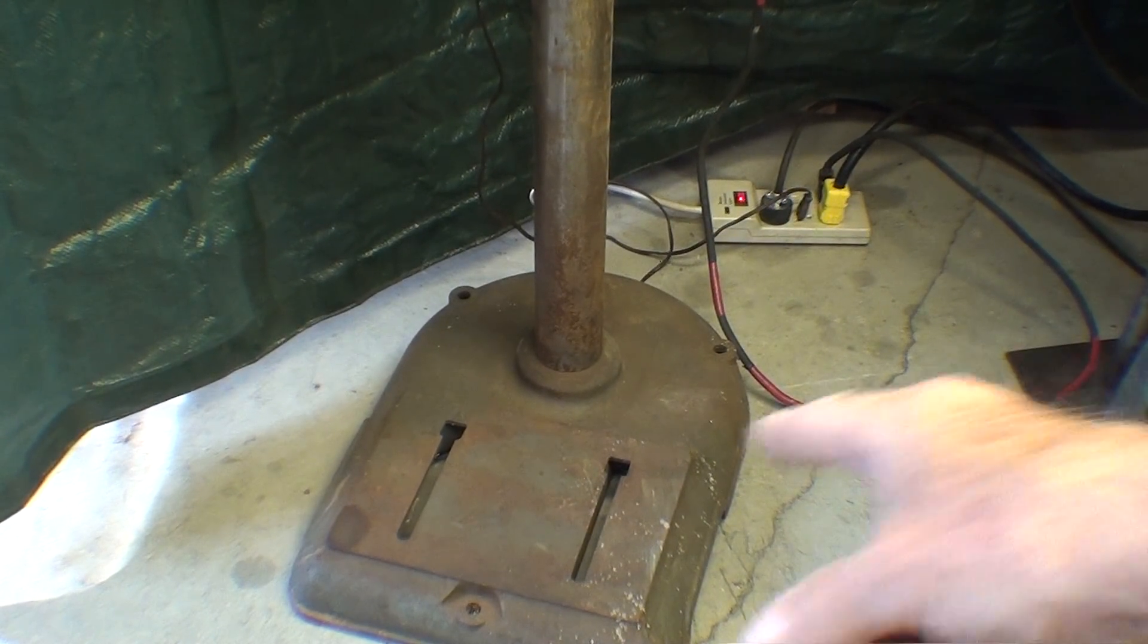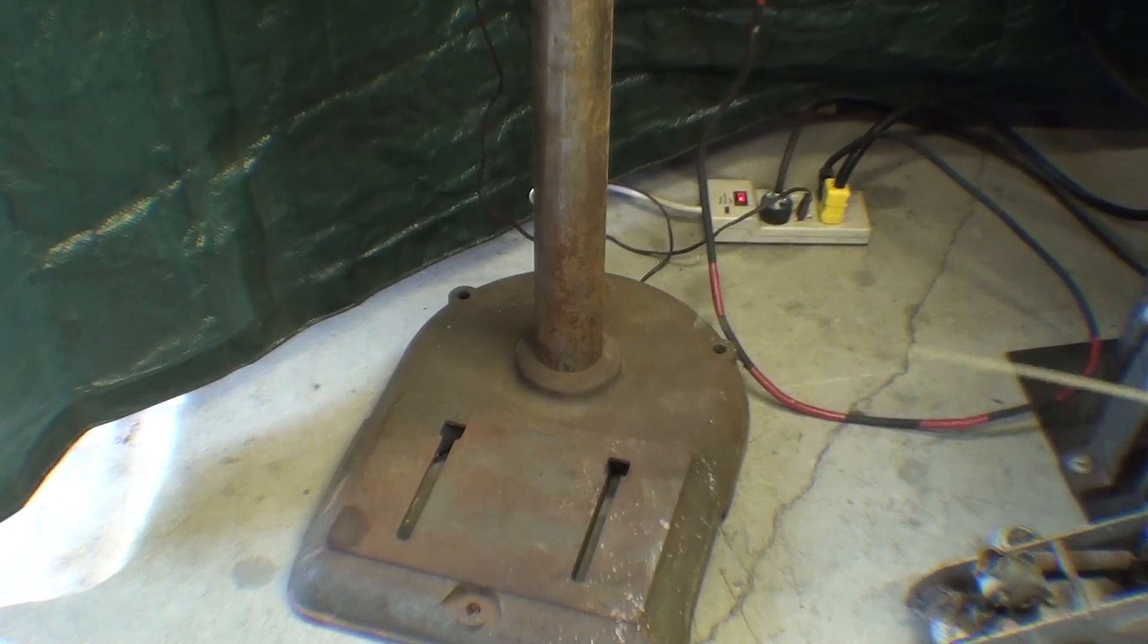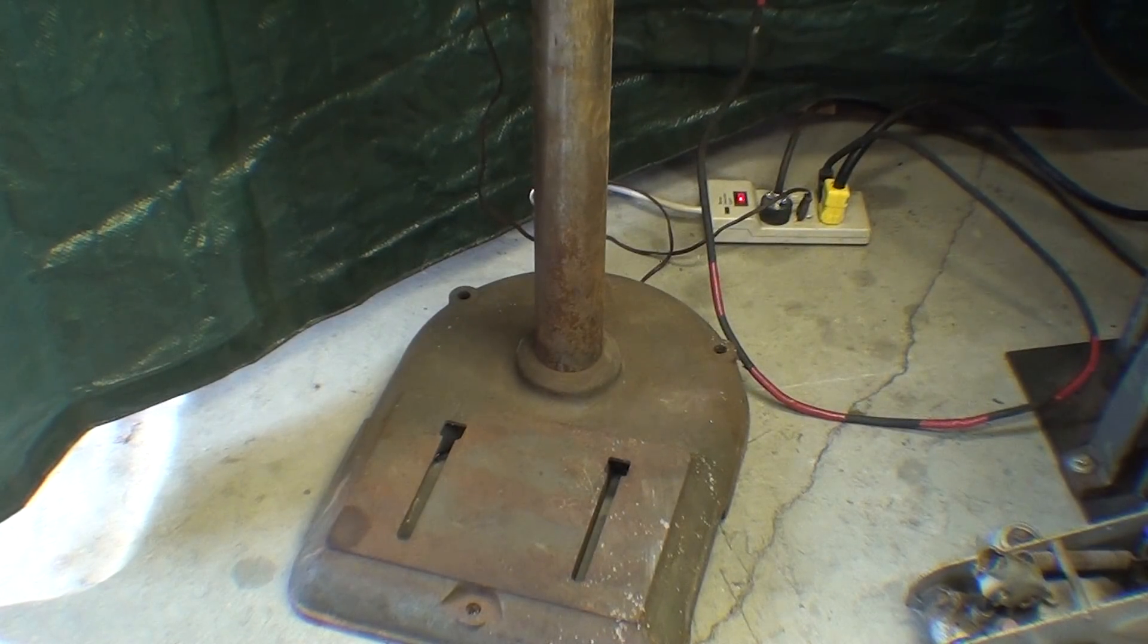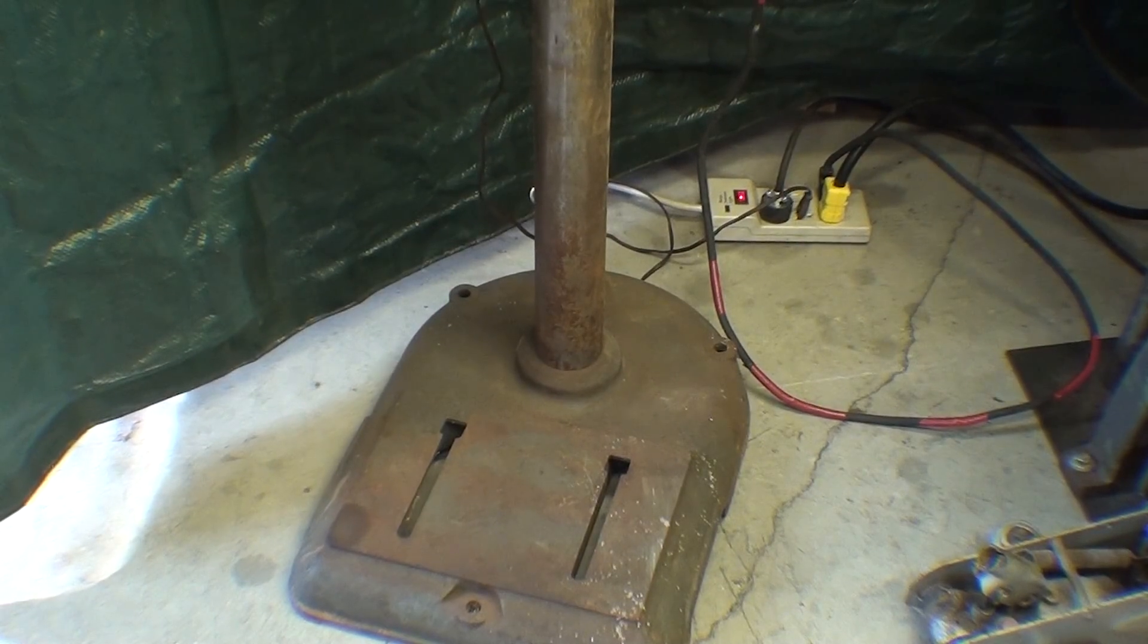A little bit of superficial rust here on the base, and right down here at the bottom on the column. Possibly this was in a garage or in a basement, so it picked up some moisture. Not much tarnish near the top of the machine. It's all near the bottom. I'd like to get a hold of some Delta gray and paint that.